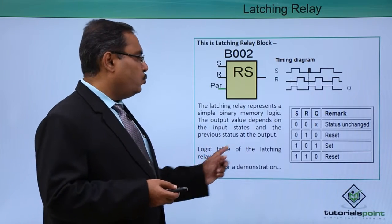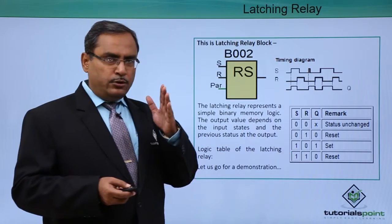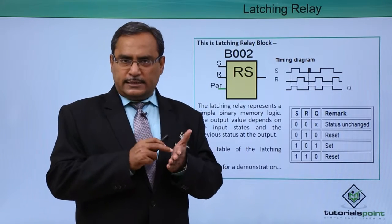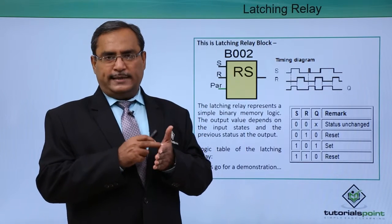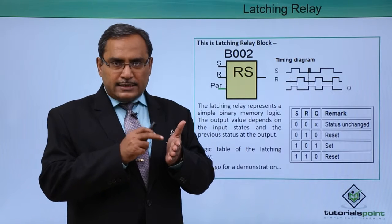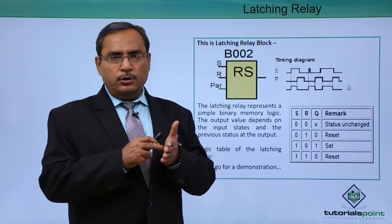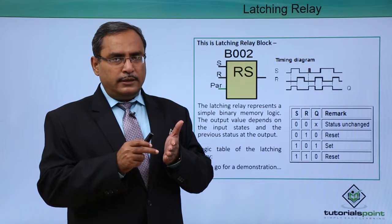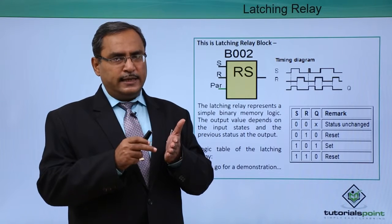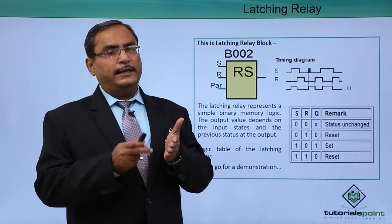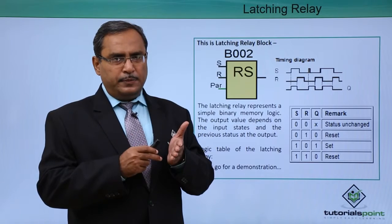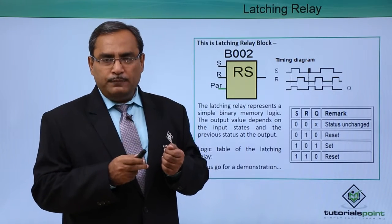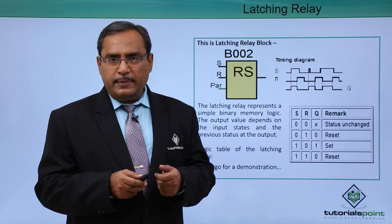The logic table of the latching relay is demonstrated here. In the case of the SR latch we have S and R inputs — set and reset inputs. When they are 00, they will produce no change in the output. When they are 01, reset is enabled so the output will be 0. In case of 10, set is enabled so the output will be set. In case of 11, the output will be non-deterministic.